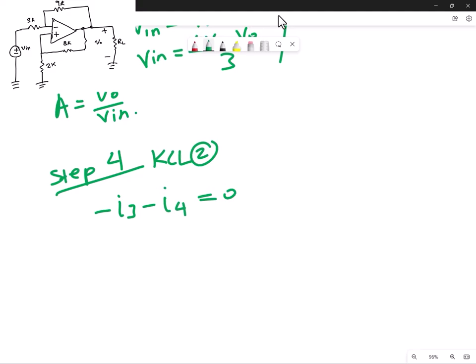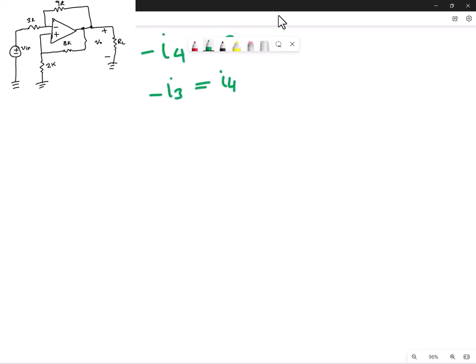All right. I'm going to rewrite this expression. So I will have this as negative I3 is equal to, if I add I4 to both sides, I'll get I4. Awesome. Remember that this only works if we assume that the currents going into the inverting and non-inverting parts of the op-amp are negligible or essentially zero.